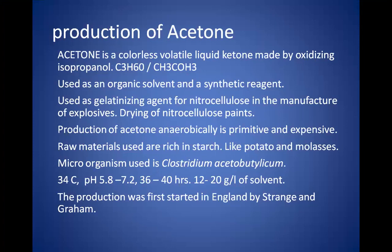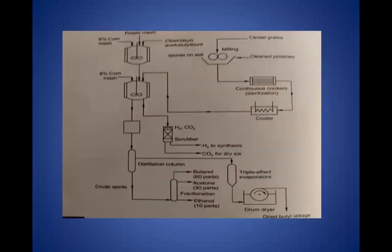The process flow: potato mash or 6% corn mash along with Clostridium acetobutylicum goes into fermentation. Once fermentation is done, it goes to a distillation column where three different products are obtained — butanol at 60%, acetone at 30%, and ethanol at 10%. After fractionation, the acetone can be separated out.